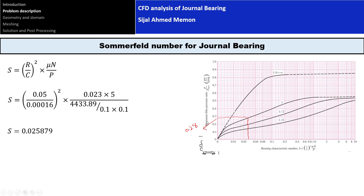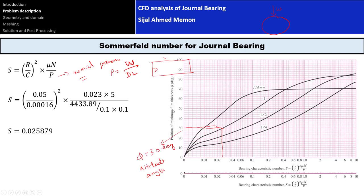Based on the Sommerfeld number, this is a very important parameter. Here I found the value of maximum pressure ratio as 0.2. This is the pressure ratio of nominal pressure divided by P maximum in the bearing. The nominal pressure is based on the ratio of loading capacity divided by the projected area, which is L times D.